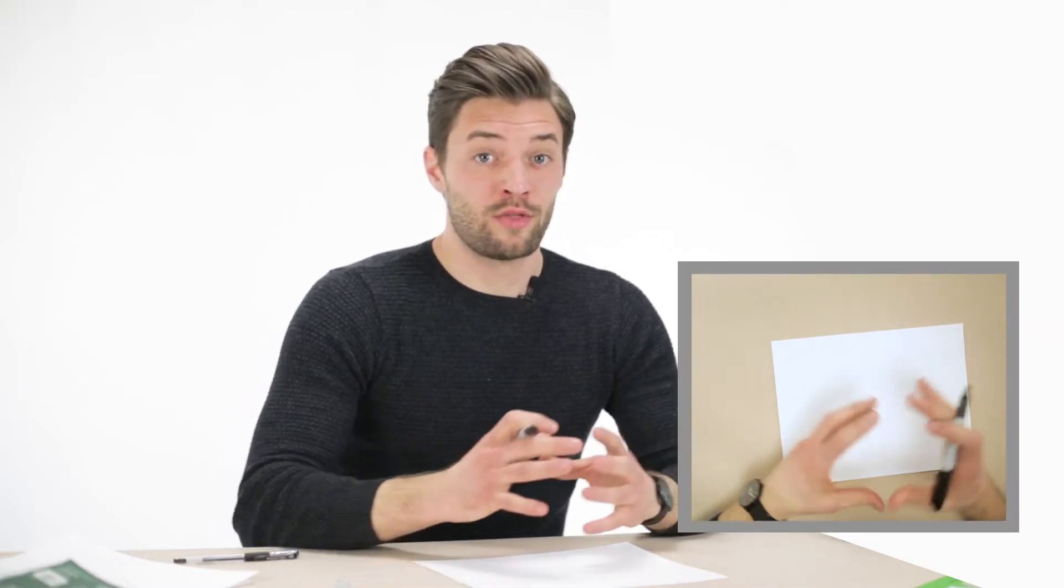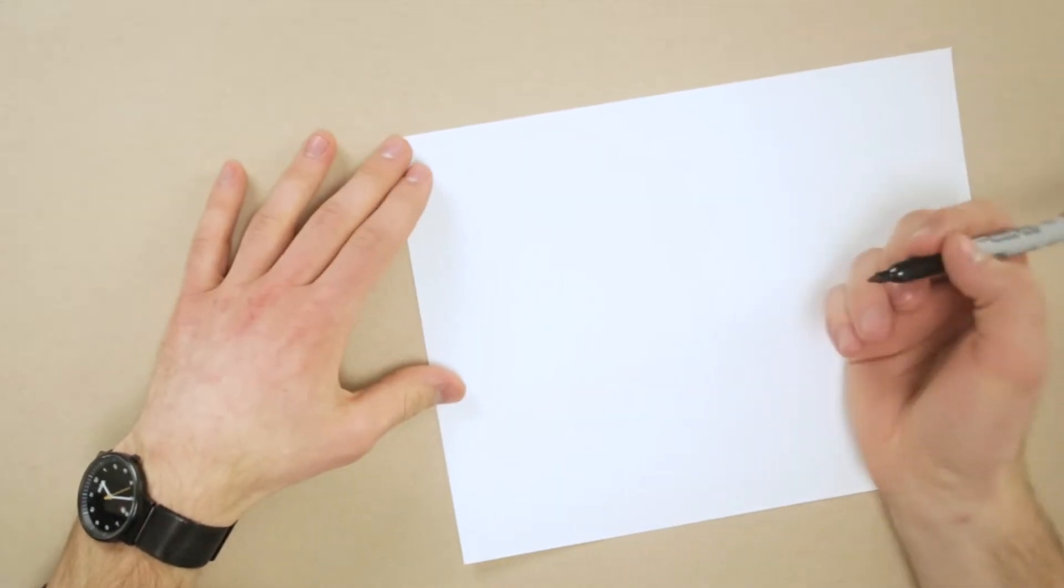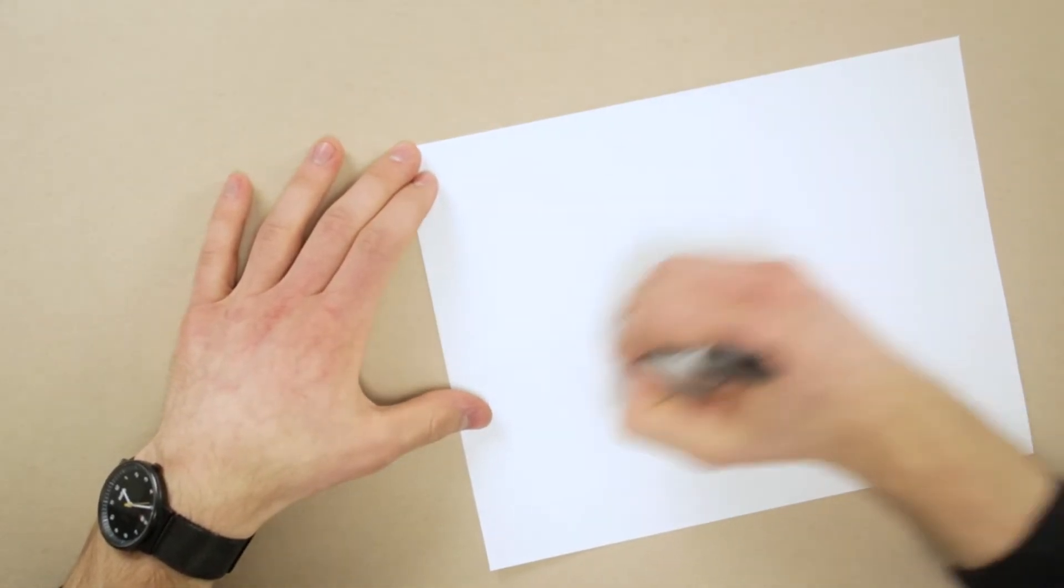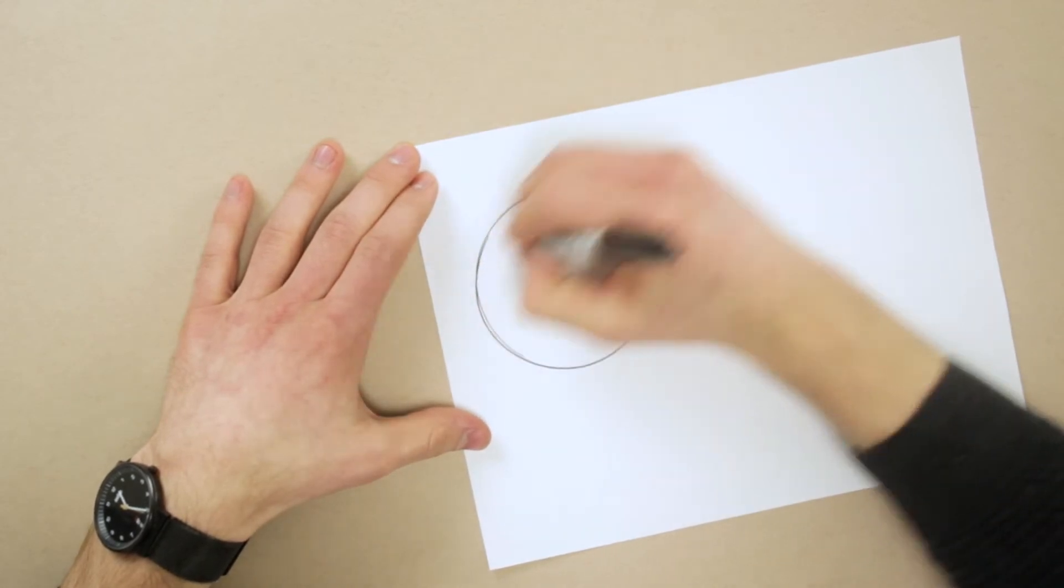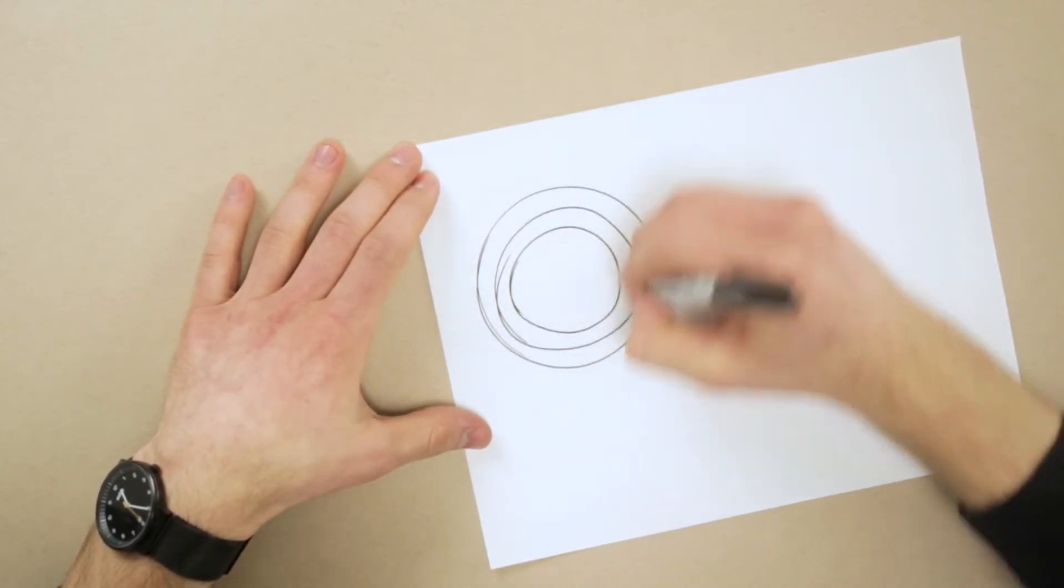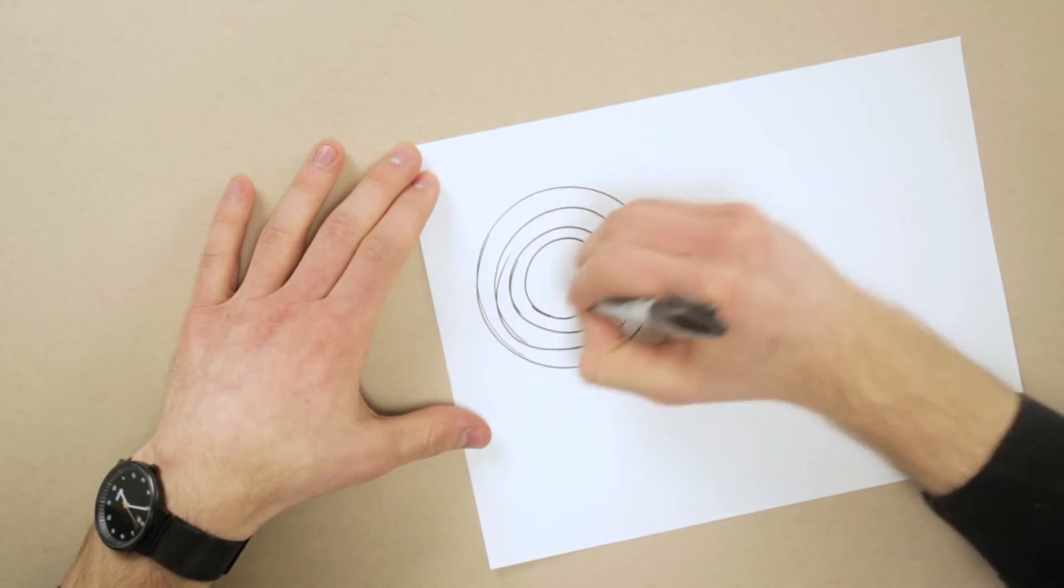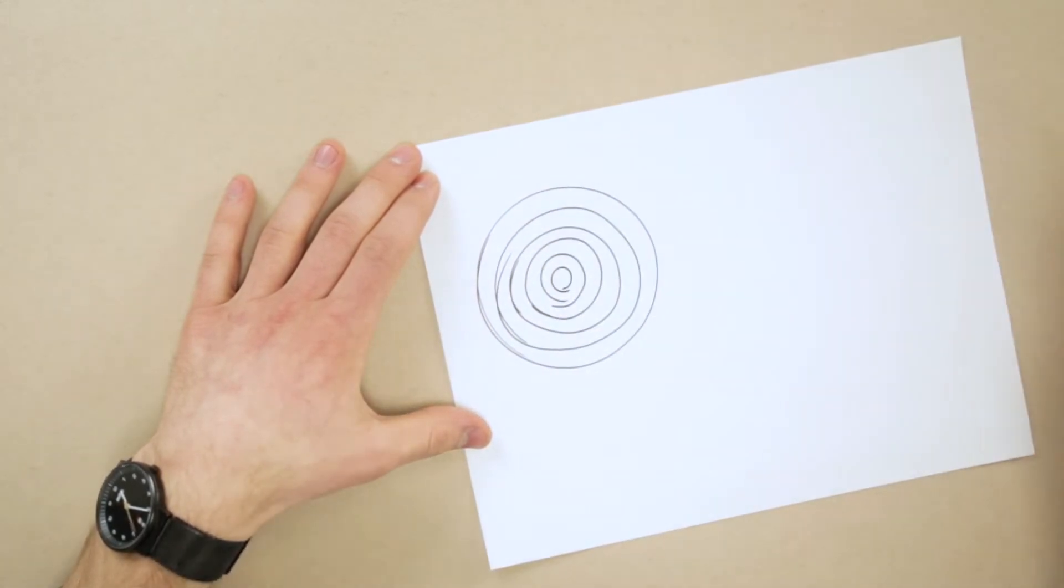When you have perfect shapes such as circles or ellipses, you notice when they're slightly off. But a way in which you can practice this is just draw your circles the same way you would and try and make them consecutively smaller but still keeping them concentric.